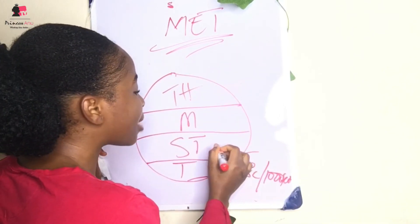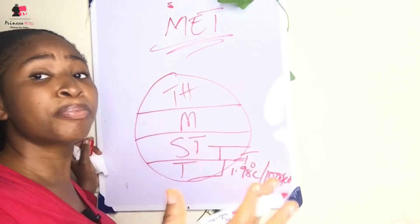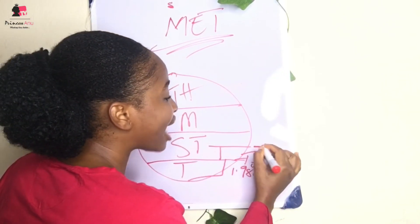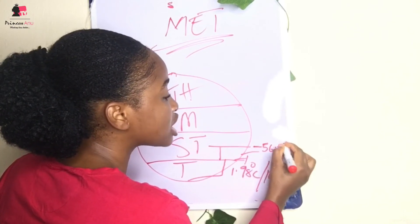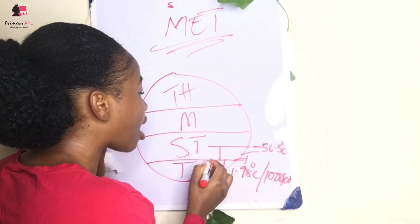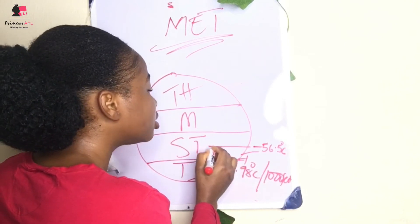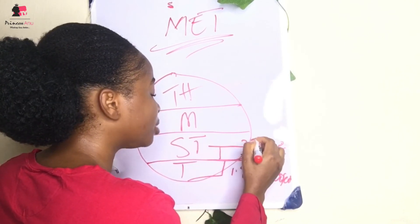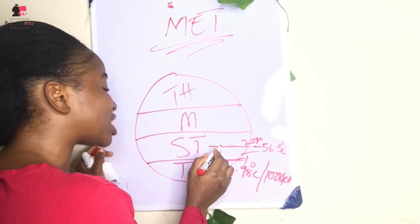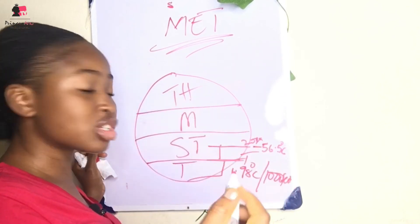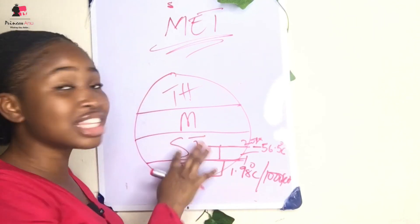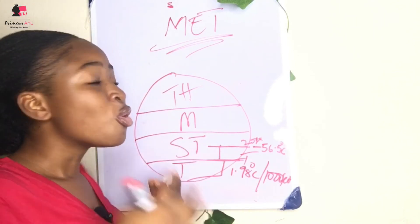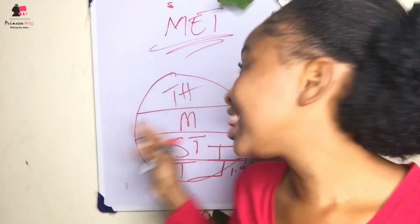From the tropopause to about 20 kilometers, you have a constant temperature of minus 56.5 degrees Celsius. This is the temperature that remains constant through that zone. Then from 20 kilometers, a different process begins to happen — we'll talk about that in another episode. This wraps up what we have concerning the atmosphere today.